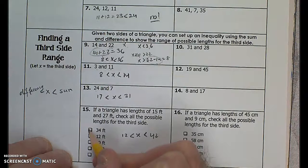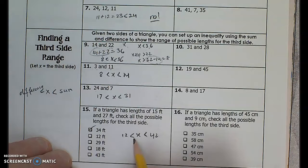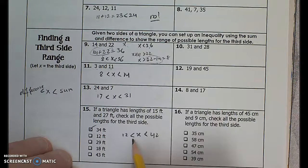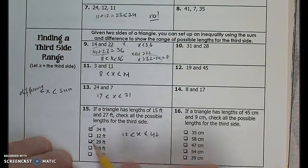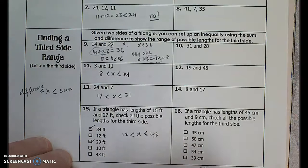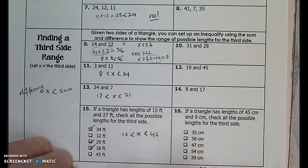Can it be 34? Yes, it can be 34. Can it be 12? No, because it has to be strictly greater than 12 — it's not greater than or equal to. Can it be 29? Yes, it can be 29 — that falls within the statement. Can it be 18? Yes, 18 is greater than 12 and less than 42.